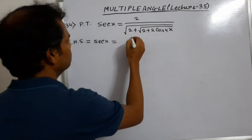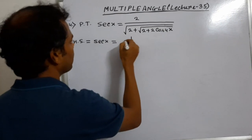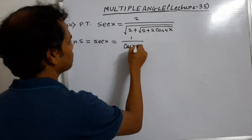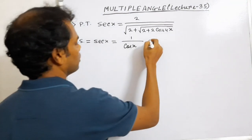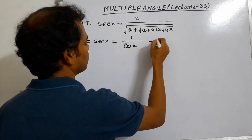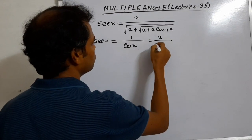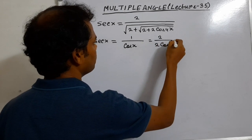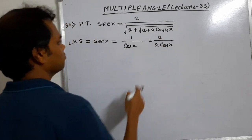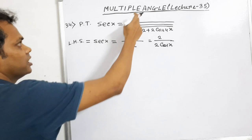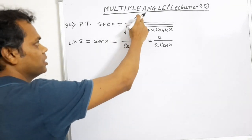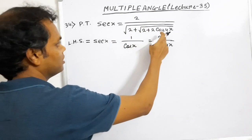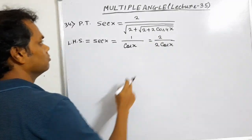Sec x equals 1 by cos x, so cos x equals 2 by 2 cos x. Why do we multiply the numerator and denominator by 2? Because here in the RHS part, there is 2 in the numerator, so we multiply numerator and denominator by 2.